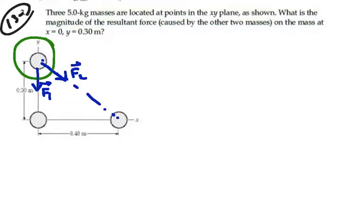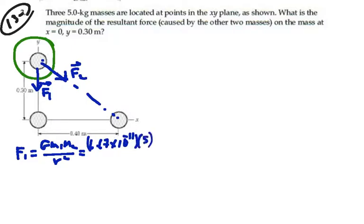Let's find the magnitude of F1 first by Newton's law of gravity. That's going to be G mass 1 mass 2 over the distance between them squared. That's 6.67 times 10 to the minus 11 times 5 kilograms times 5 kilograms, and the distance between them is 0.3 meters squared. If we calculate that, we get 1.85 times 10 to the minus 8 newtons.